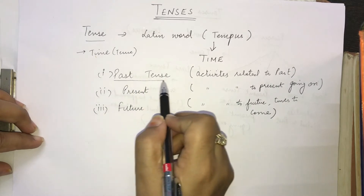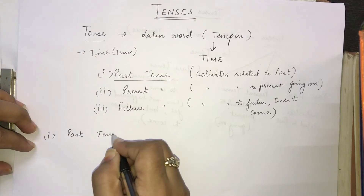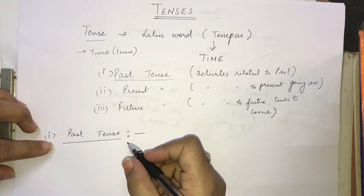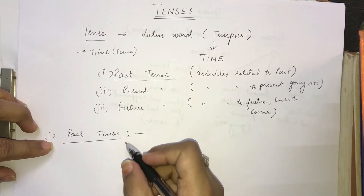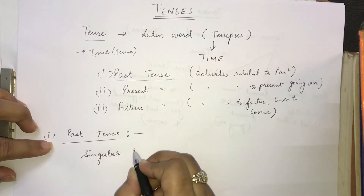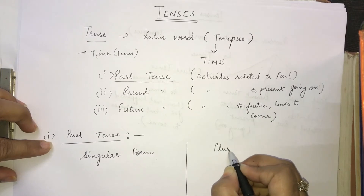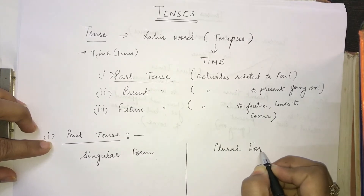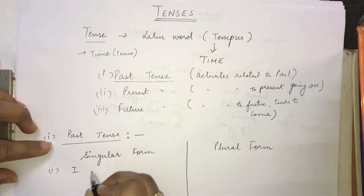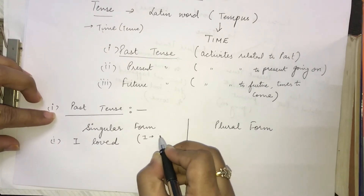Now we will be learning about the very first category, that is past tense. Let us begin with the past tense. Let me give an example to show what past tense is and how it is used. We will take examples in two different forms — one is singular form and the other one is plural form. The very first example is: I loved. Now 'I' means first person.